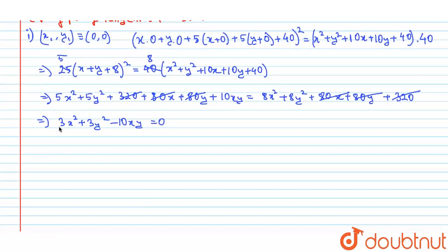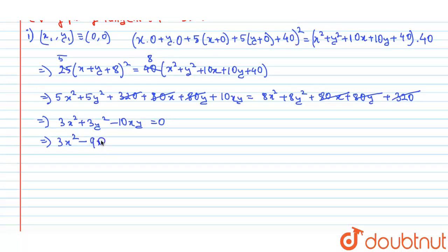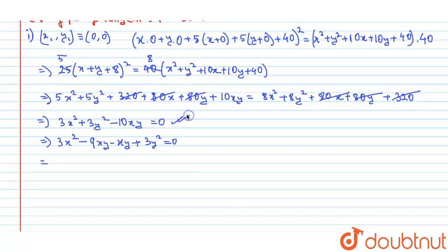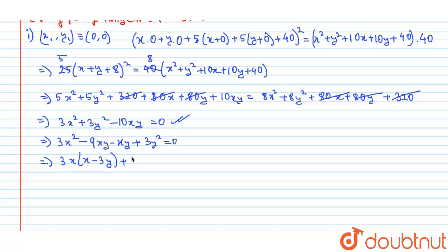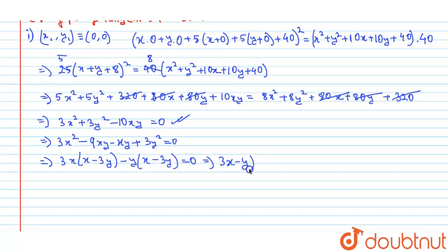After cancellation, the remaining equation is 3x² + 3y² - 10xy = 0. Factorizing: 3x² - 9xy - xy + 3y² = 0, giving 3x(x - 3y) - y(x - 3y) = 0. So the equation of pair of tangents for part one is (3x - y)(x - 3y) = 0.